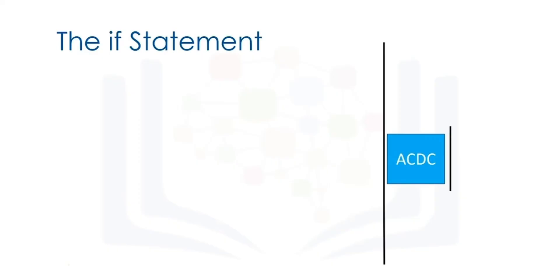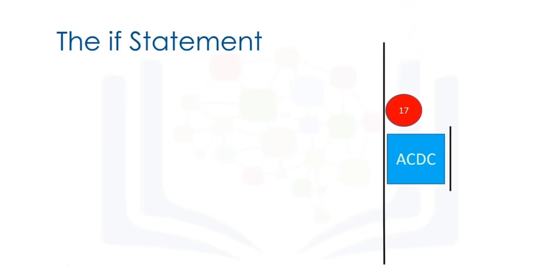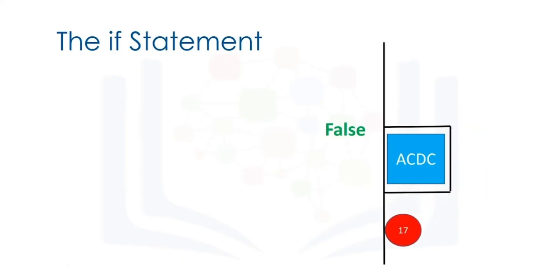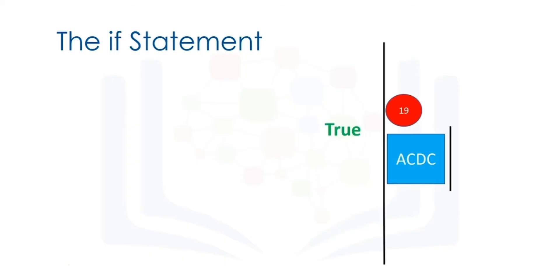If the statement is false, your program will skip the task. For example, consider the blue rectangle representing an ACDC concert. If the individual is 18 or older, they can enter the ACDC concert. If they are under the age of 18, they cannot enter the concert. An individual proceeds to the concert — their age is 17. Therefore, they are not granted access to the concert, and they must move on. If the individual is 19, the condition is true. They can enter the concert, then they can move on.